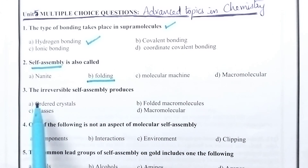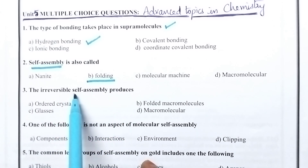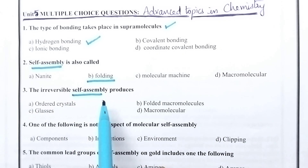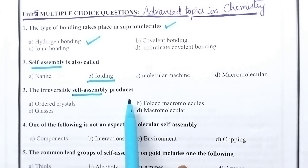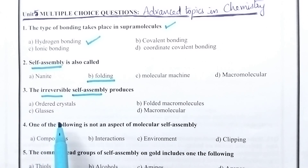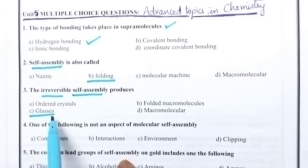The irreversible self-assembly produces — whenever self-assembly mainly deals with higher surface concentrations, then it is reversible. Especially, it results in the formation of glasses. So option C, glasses, is the right answer.